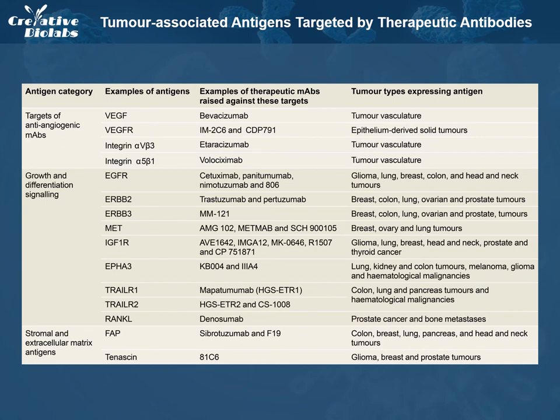Antigens involved in angiogenesis are usually proteins or growth factors that support the formation of new microvasculature, including VEGF, VEGFR, integrin-alpha-v-beta-3, and integrin-alpha-5-beta-1. Tumor stroma and the extracellular matrix are indispensable support structures for a tumor. Stromal and extracellular matrix antigens that are therapeutic targets include FAP and Tenascin.